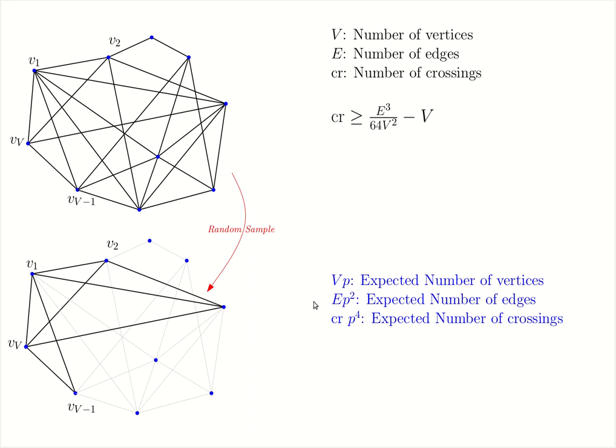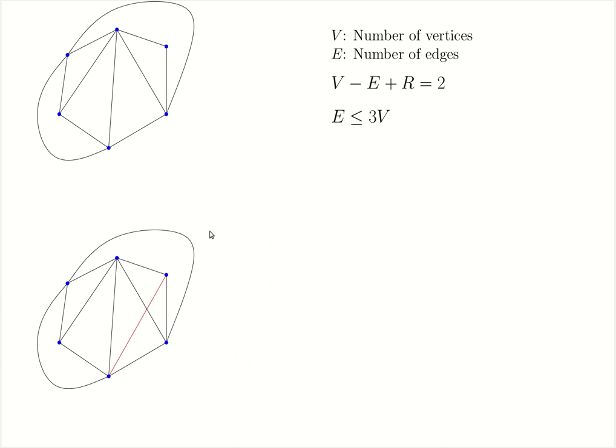Keep these three observations in mind. Now we'll look at the general planar graph. Consider a general planar graph embedded in the plane. Assume it has V vertices and E edges. There is a theorem that says the number of edges in a planar graph is at most three times the number of vertices. In fact, it can even prove a slightly better bound.